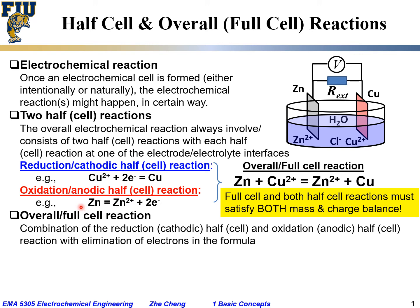Now look at the anodic or oxidation half-cell reaction. For mass balance: on the left side we have one zinc metal atom, and on the right side we also have one zinc atom — so it is balanced in terms of mass. For charge: on the left side, zinc metal has zero valence and zero net charge. On the right side, it is zinc 2+, but there are also 2 electrons giving a 2− charge. So the overall charge is zero — neutral. We also have charge balance for the anodic half-cell reaction.